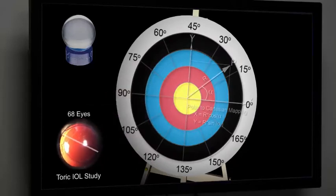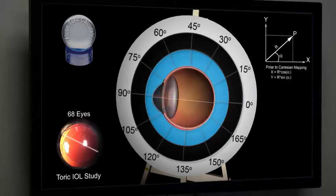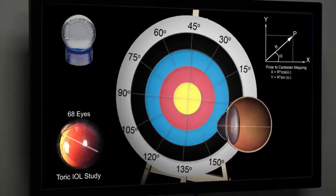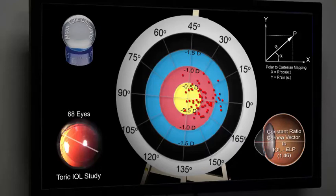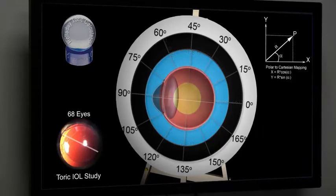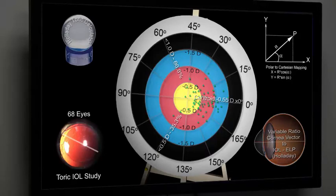All calculators use polar to Cartesian mapping, but there are significant differences in the methods. The toric calculator on the Alcon website assumes a constant ratio when calculating the corneal vector of the toric lens, irrespective of the effective lens position or toric lens power. When displayed on a double plot, the centroid or prediction error had a value of 0.52 diopters, and only 33.8% of patients would end up within half a diopter of intended astigmatism. The Holladay calculator does use a variable ratio when converting the toric cylinder power to the corneal plane; nevertheless, the results were similar, with only 35% of patients within half a diopter of predicted astigmatism.